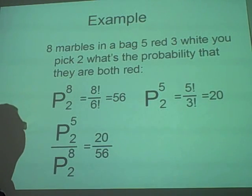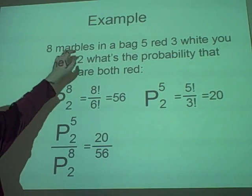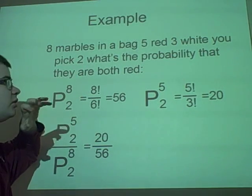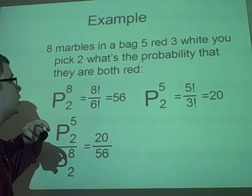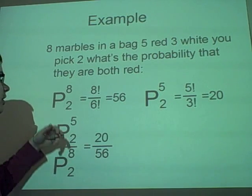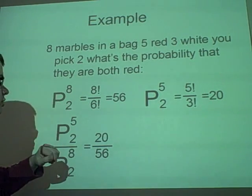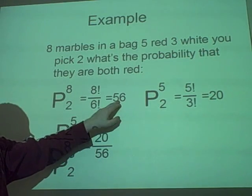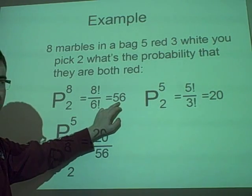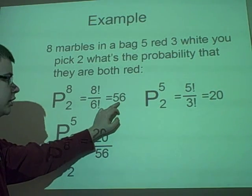We should have an example. Here we go. Oh, just ignore these numbers for the moment. Eight marbles in a bag, and we have five red and three white. You pick two of them. Now, what is the probability that they are both red? So, we have eight, and we want to pick two of them. So, fifty-six already. That is our total number of possible different balls we could pick.